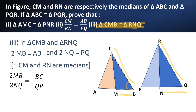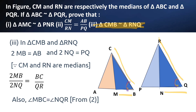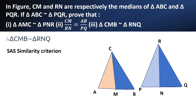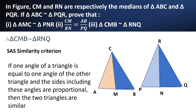Also, angle MBC is equal to angle NQR, which is angle B equal to angle Q from equation 2. Now we can say triangle CMB is similar to triangle RNQ because of SAS similarity criterion — if one angle of a triangle is equal to one angle of the other triangle and the sides including these angles are proportional, then the two triangles are similar. Hence proved.